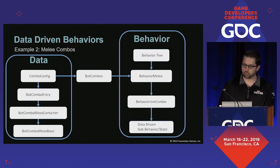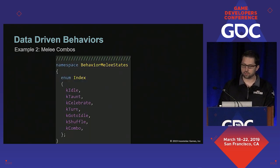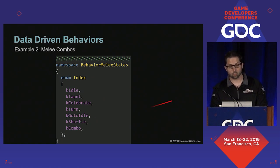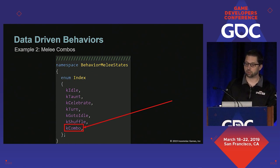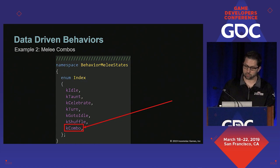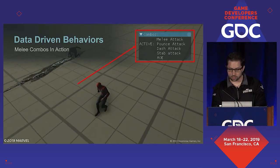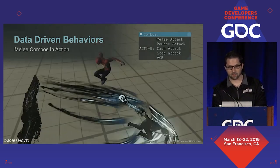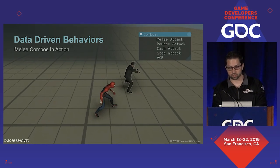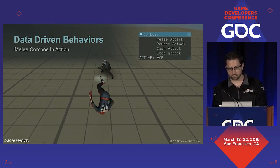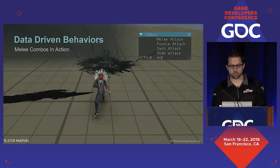Finally, let's briefly take a look at an example user of behavior use combo — behavior melee. It's a fairly standard state machine that has a bunch of states that it handles transitioning between in code. One of them is using a combo. If it's the bot's turn to attack and bot combos has a valid combo entry, this behavior will start behavior use combo. Here's a brief look at combos in action — there's some debug display up here. This character has five combos, and active will be drawn next to each of the combos that he is currently using. Each of these uses different states whose static parameters are configured entirely in data.